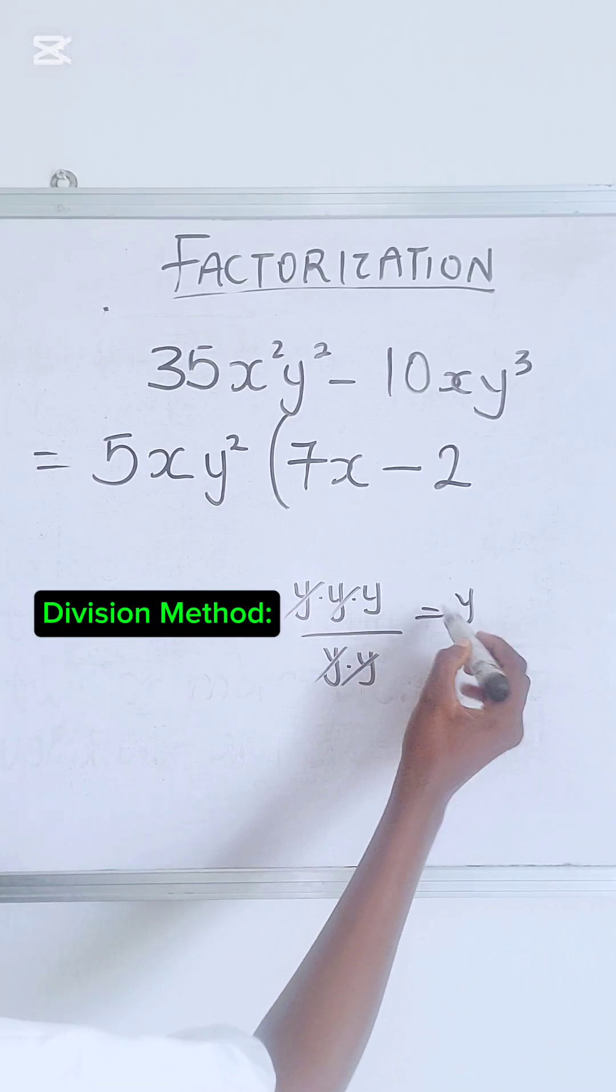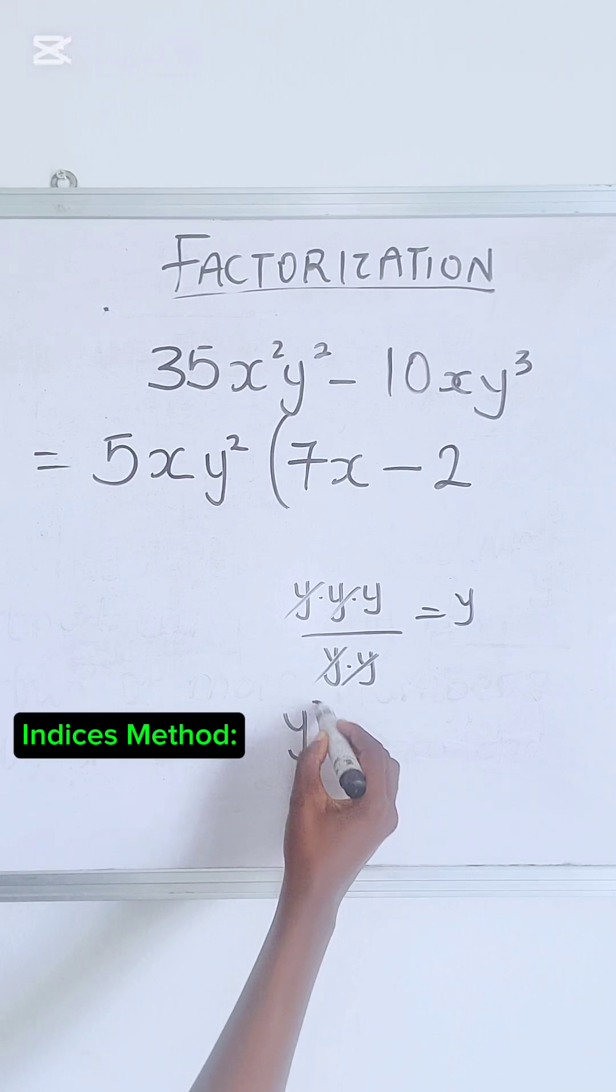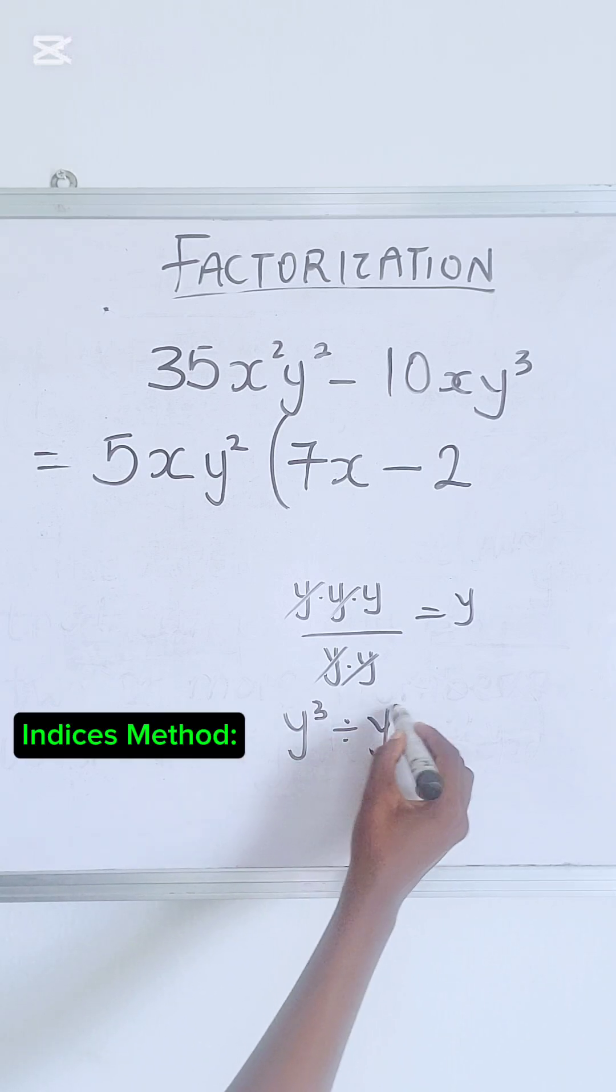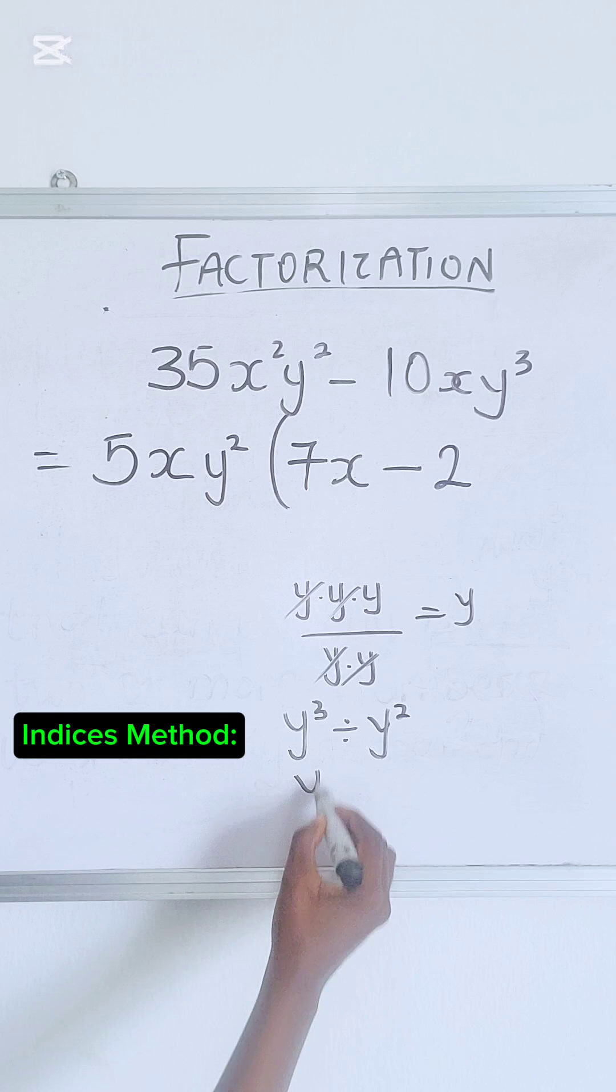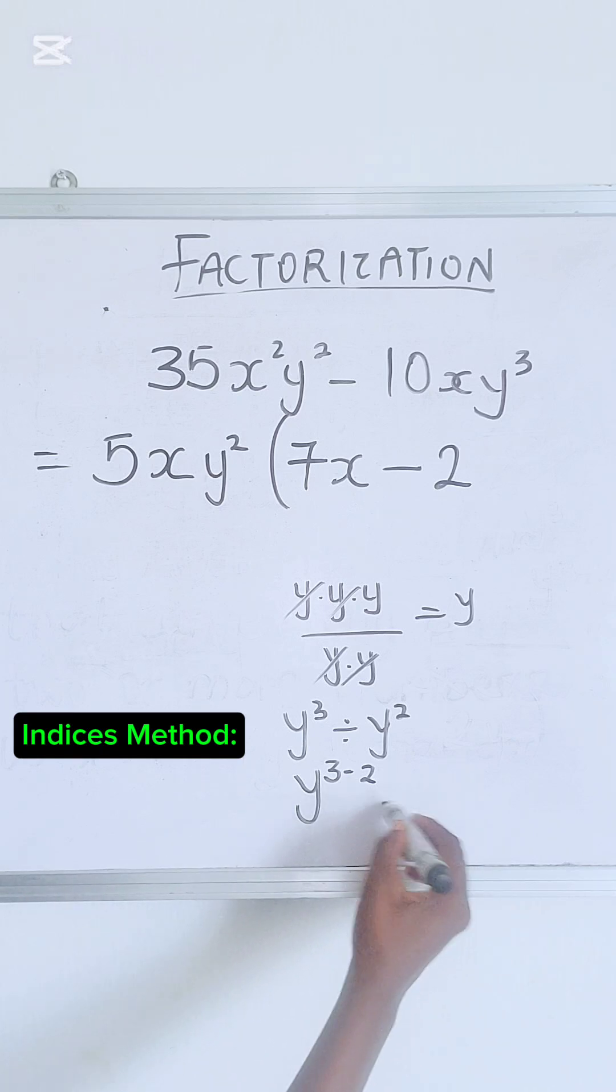Also, using indices, you have y cube divided by y squared. Your indices says that because the base is common, you're going to subtract the power because of the division. So you're left with y.